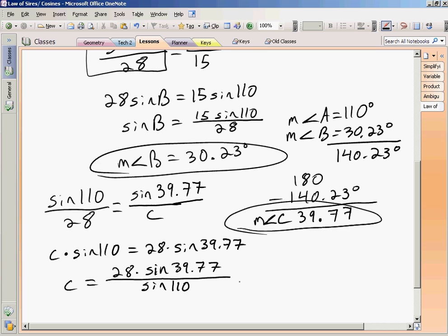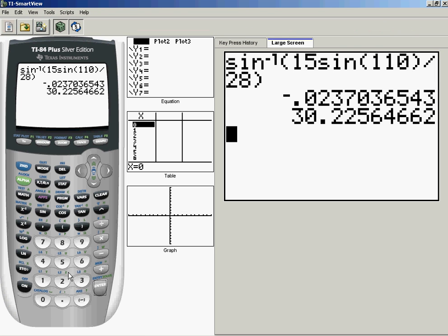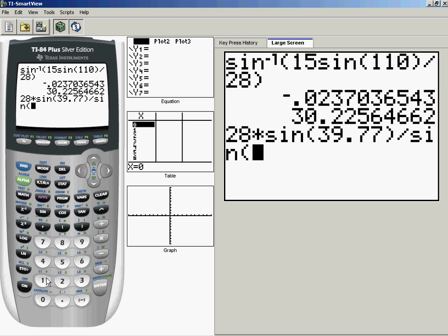So I think I'm ready to put this in the calculator. So that's going to be 28 times sine of 39.77 divided by sine of 110. And again, take a look and make sure the order of operation is going to do what I want it to.